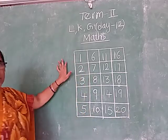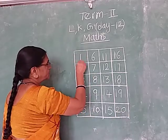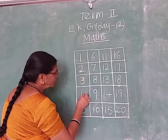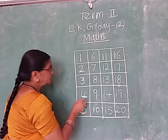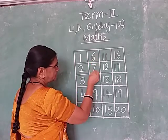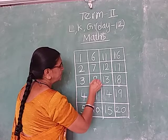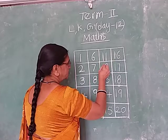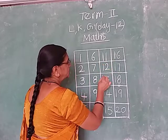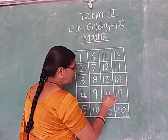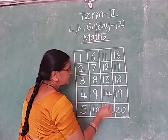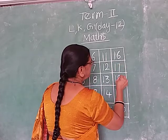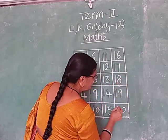Okay. Shall I say one more time? 1, 2, 3, 4, 5, 6, 7, 8, 9, 10, 11, 12, 13, 14, 15, 16, 17, 18, 19, 20.